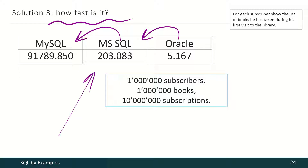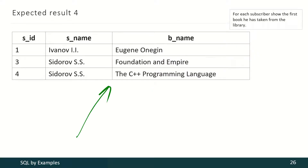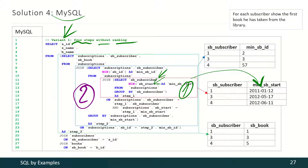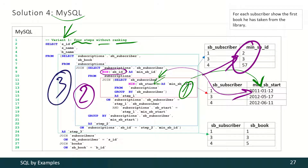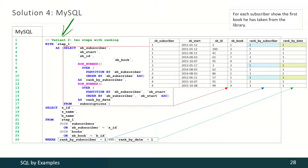In the next task we have to show for each subscriber the first book he took from the library — not a list of books, but only one book. For MySQL with the first variant we use four steps without ranking. On step 1, for each subscriber we select the first date of his visit to the library. On step 2, we find out the minimal subscription ID for that visit. On the next step, we use those subscription IDs to find out book IDs. And on the final step we transform those book IDs into titles.